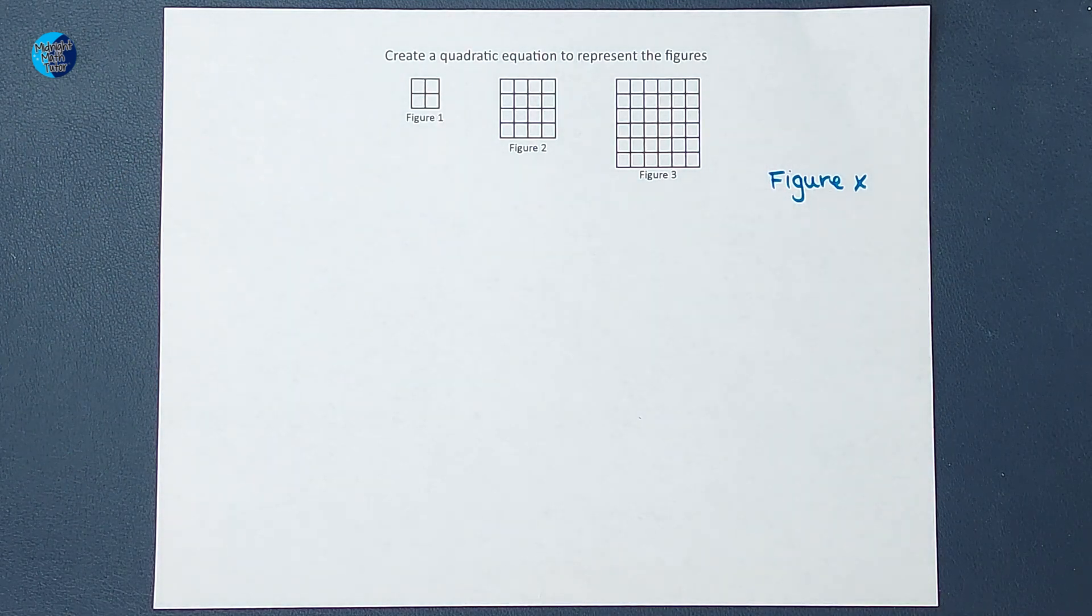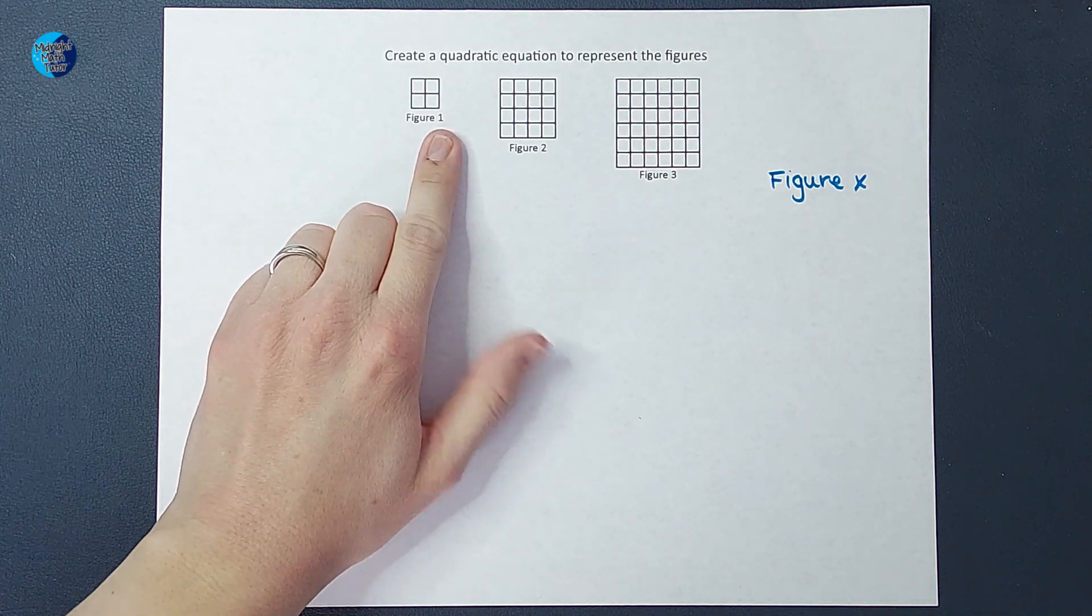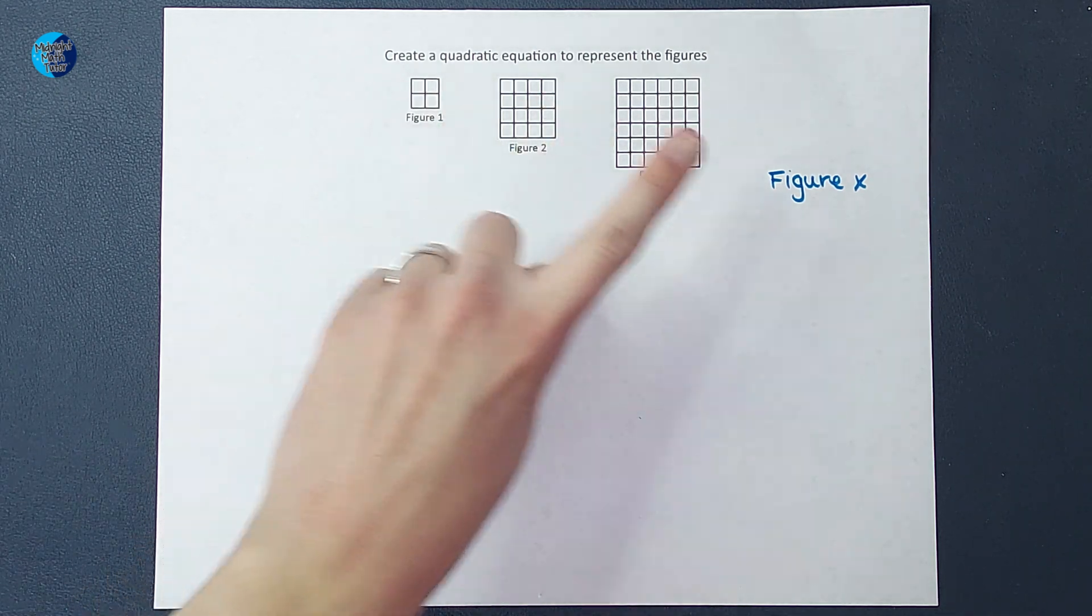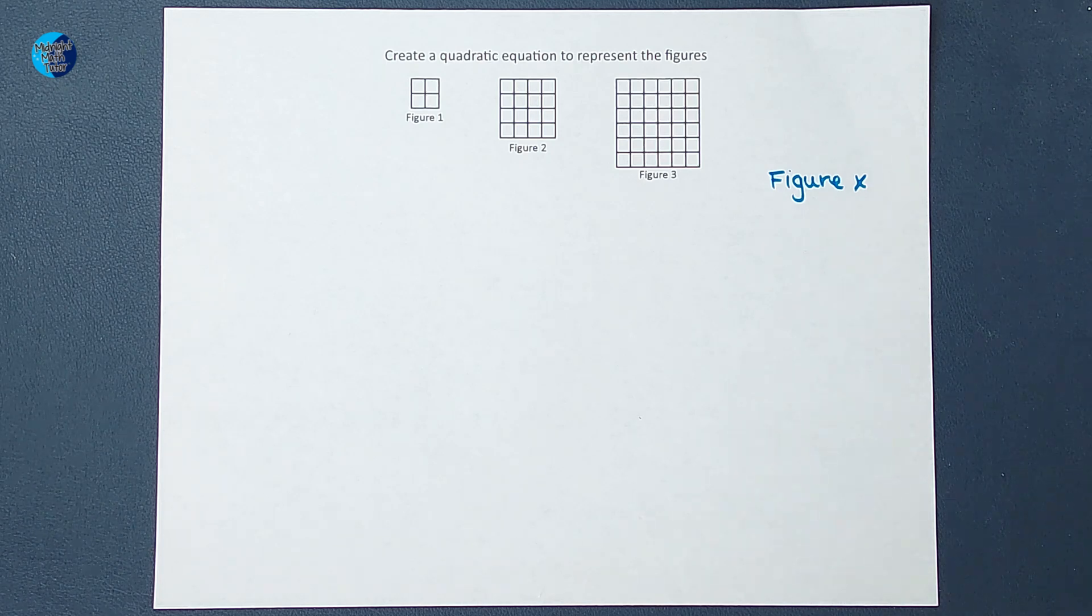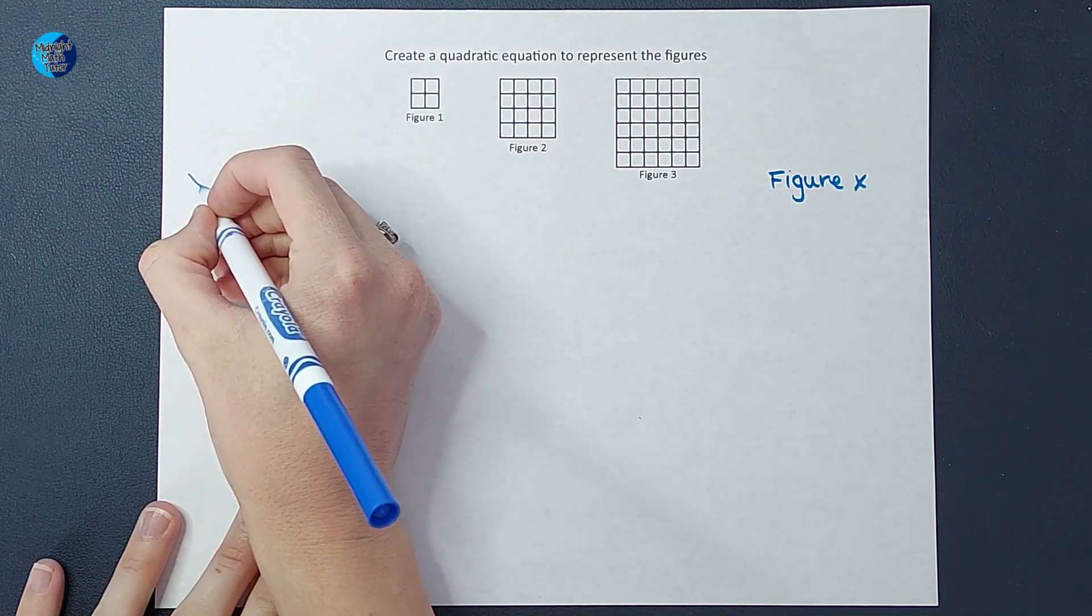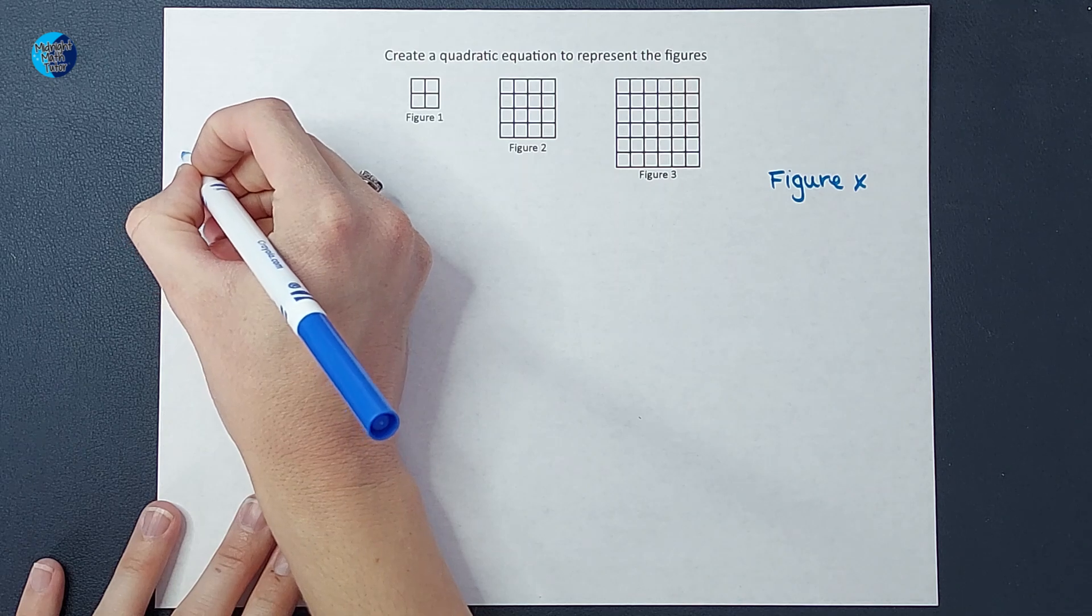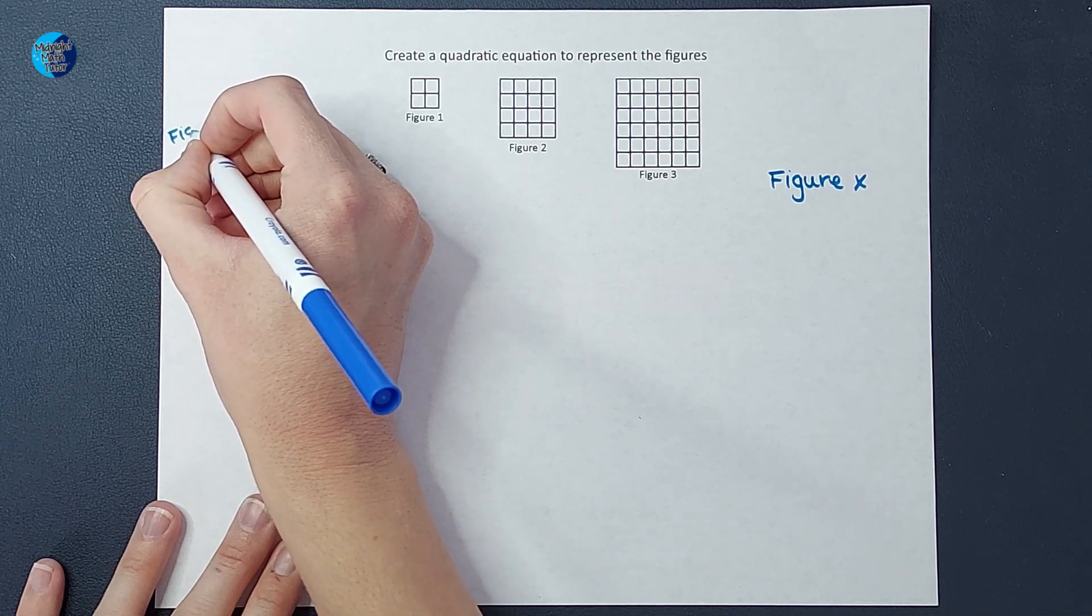The next thing I'm going to do is make a table comparing the figure number to how many boxes are in each of these figures. So if I make a table here, x is going to be my figure number.